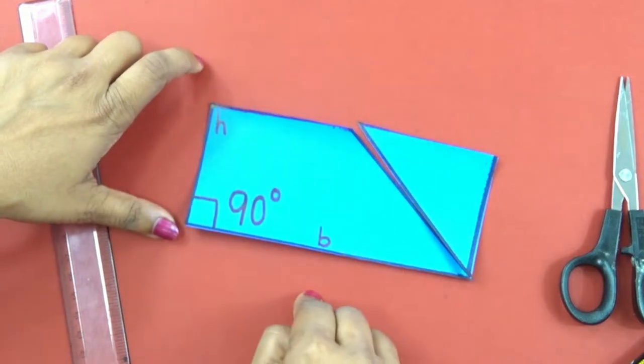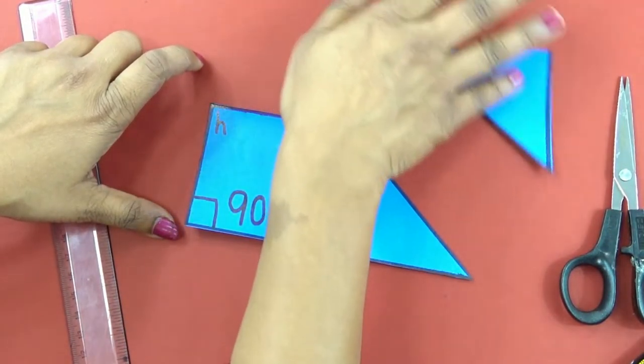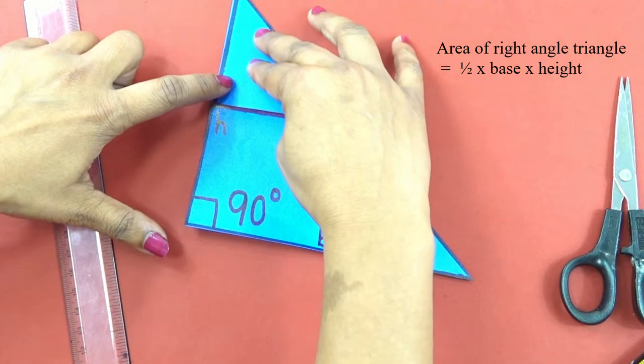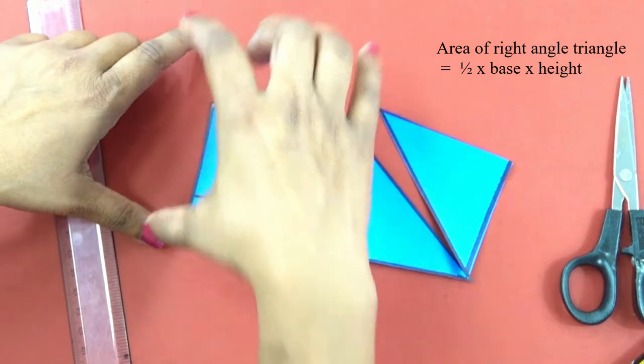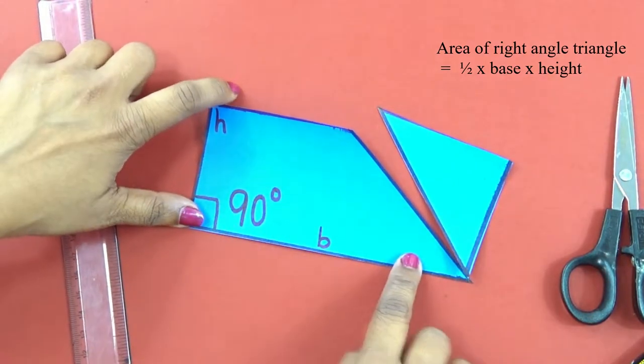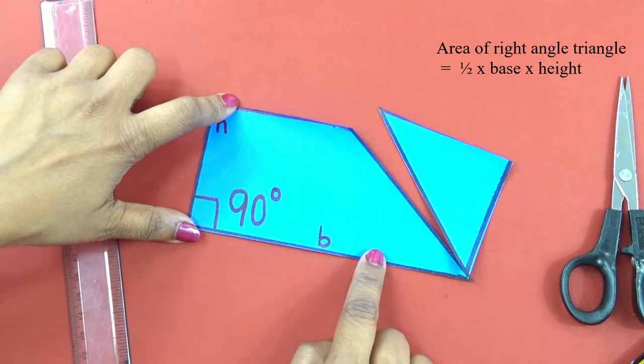So we have found here also that area of this right angle triangle is half, as we have taken the height as half base times height of the rectangle.